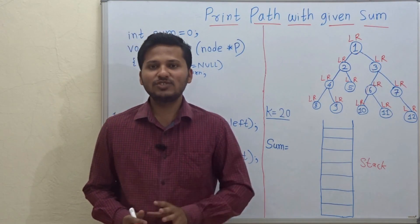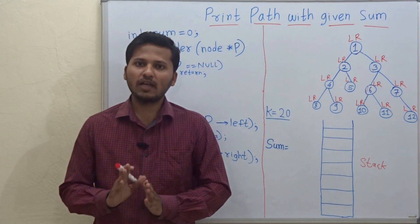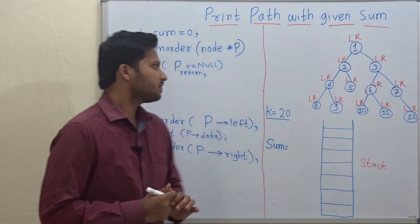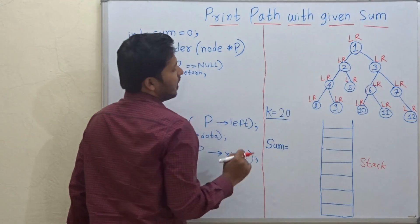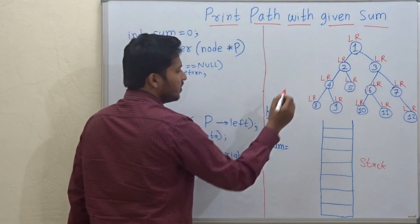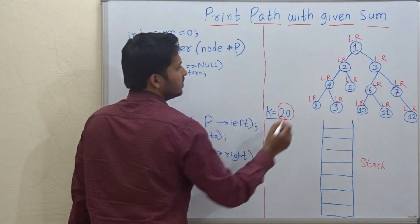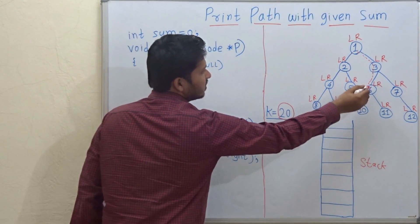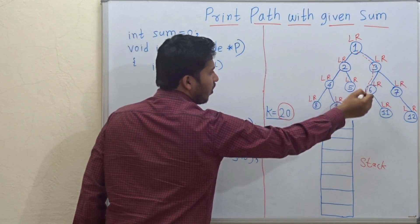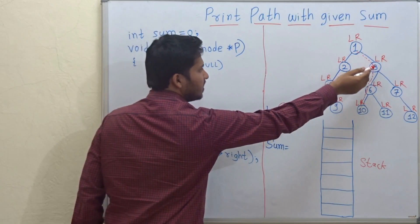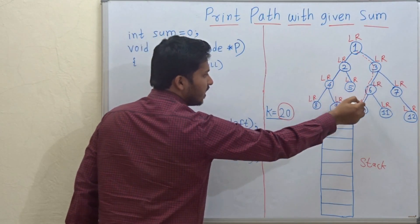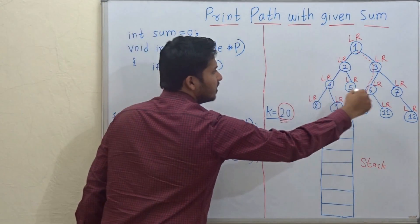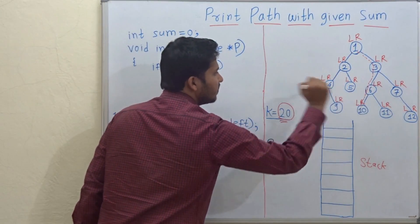Hello friends, today we are going to see how to print a path in a binary tree which has the given sum. This is the binary tree and if we want a path with sum 20, then this is the path in which the nodes' addition forms the sum 20. That is 1 plus 3 is 4, plus 6 is 10, plus 10 is 20. This is how we find a path in a binary tree which has the given sum.